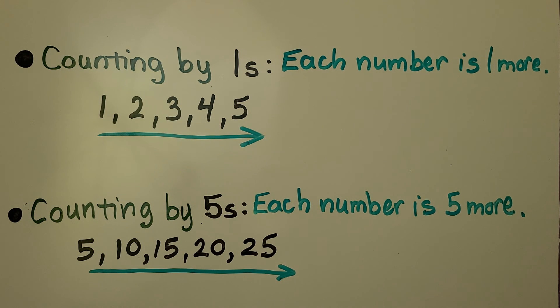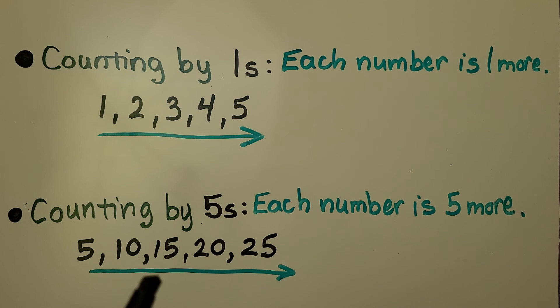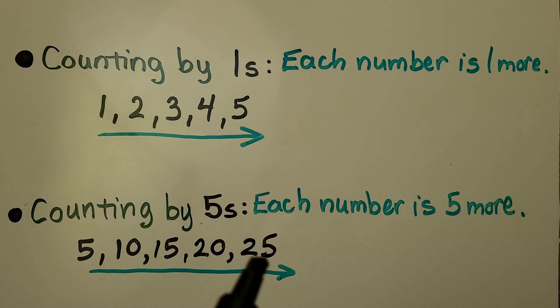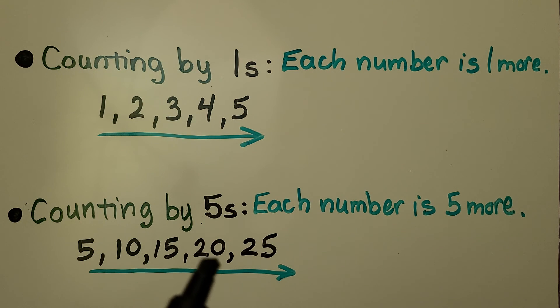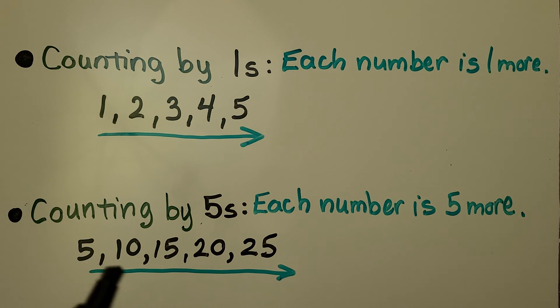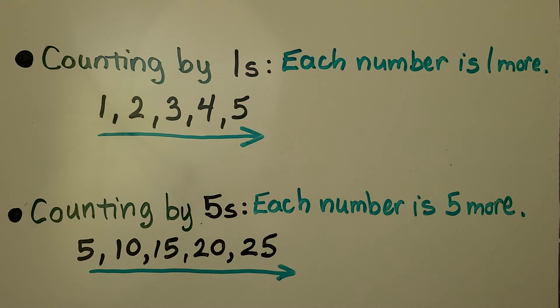Counting by 5s, each number is 5 more: 5, 10, 15, 20, 25. Each number as we move towards the right is 5 more than the one before it.